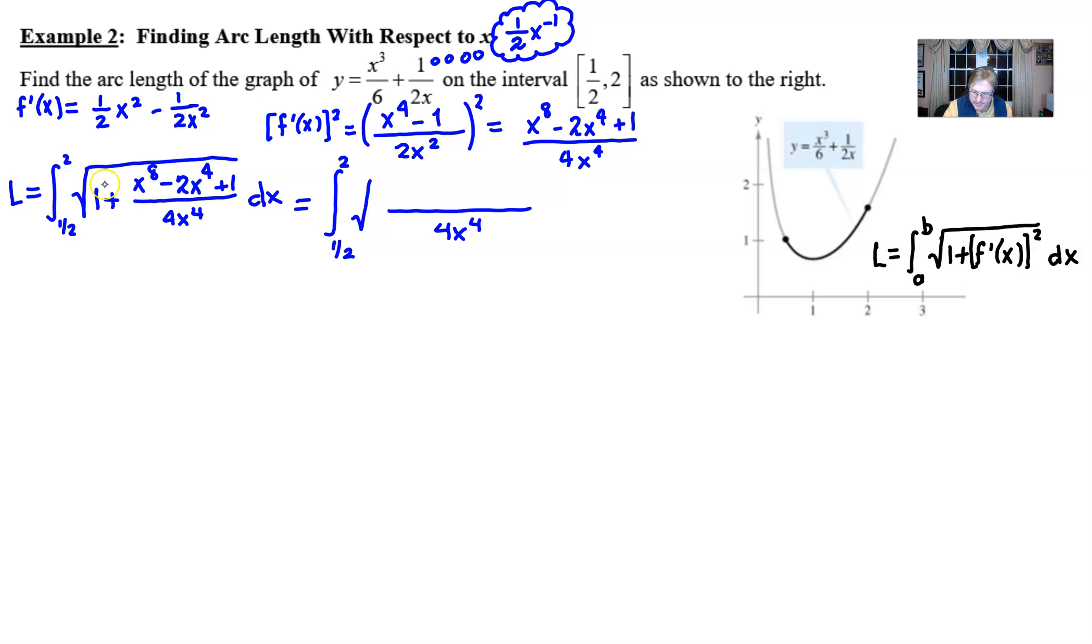Which is essentially going to give me a common denominator and now I can add these numerator parts. Basically the x to the eighth doesn't combine with anything but this 4x to the fourth and minus 2x to the fourth creates a positive 2x to the fourth and of course the plus one stays as it is, all still under that square root.